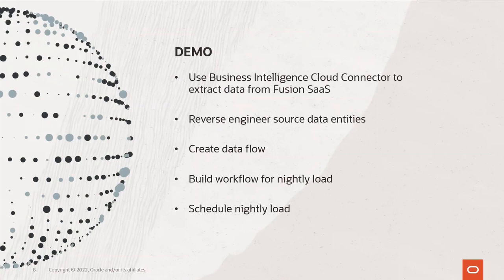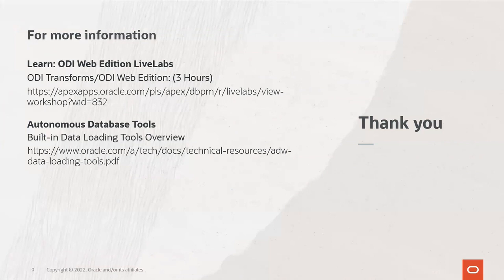In this demo, we saw how easy it was to load data from Fusion SaaS to your data warehouse. Loading from other sources like Oracle EBS follows the same concept — you create a connection to Oracle EBS, reverse engineer the data entities, and create the data flows. For more information, there are links available. For a first-hand experience with ODI Web Edition, we have LiveLabs. To learn more about Autonomous Database tools, a link is provided as well. This concludes our session today. Thank you.